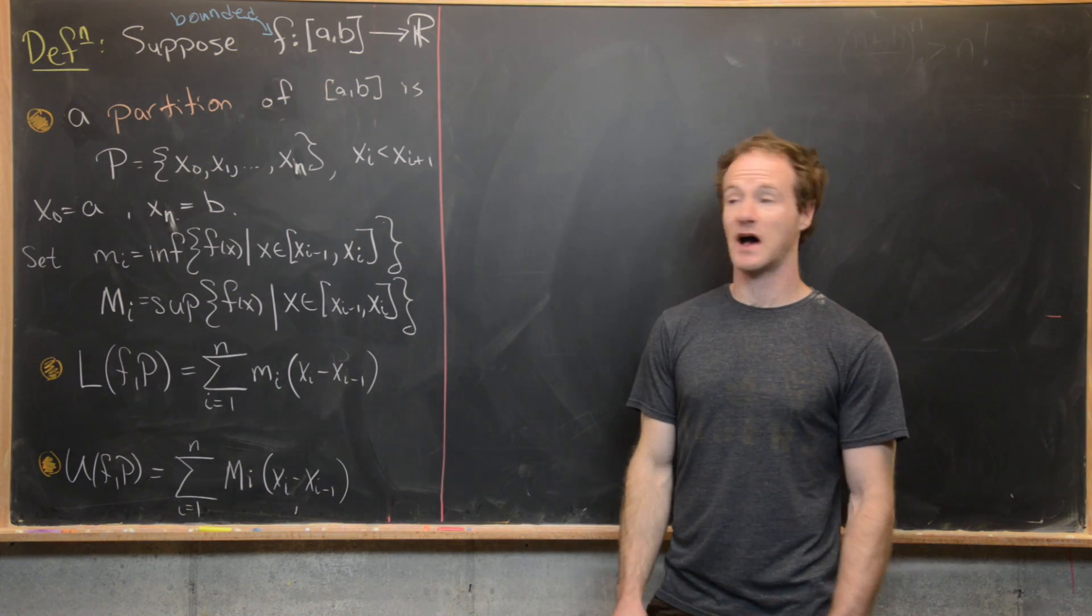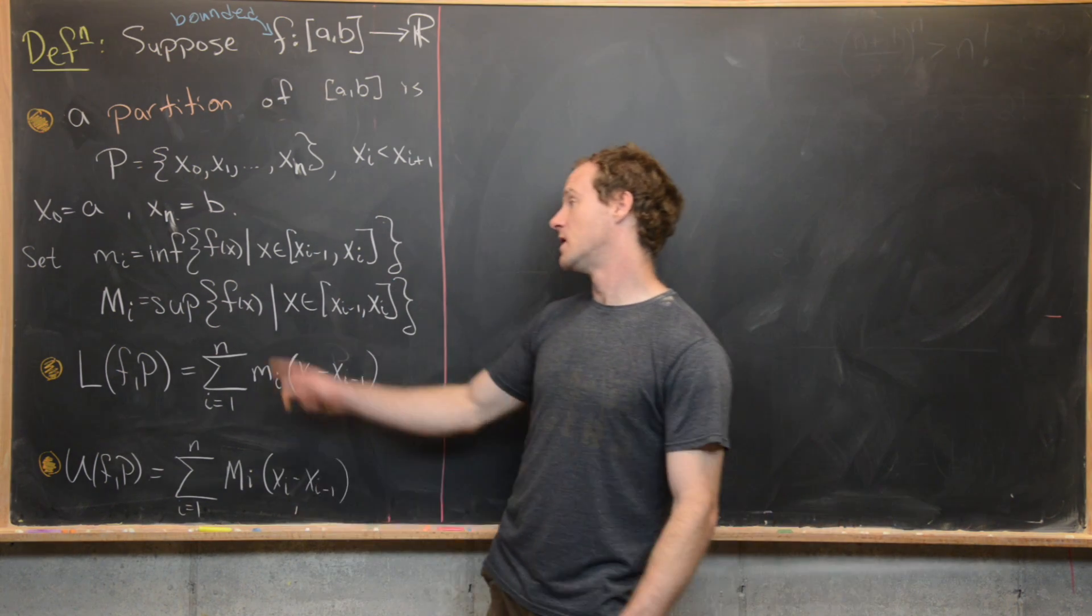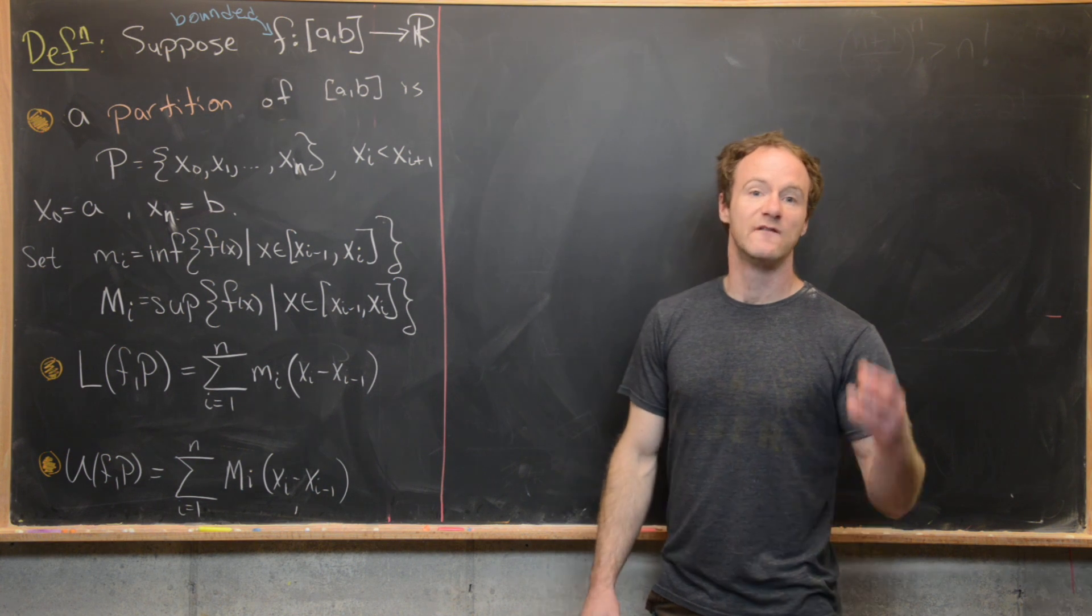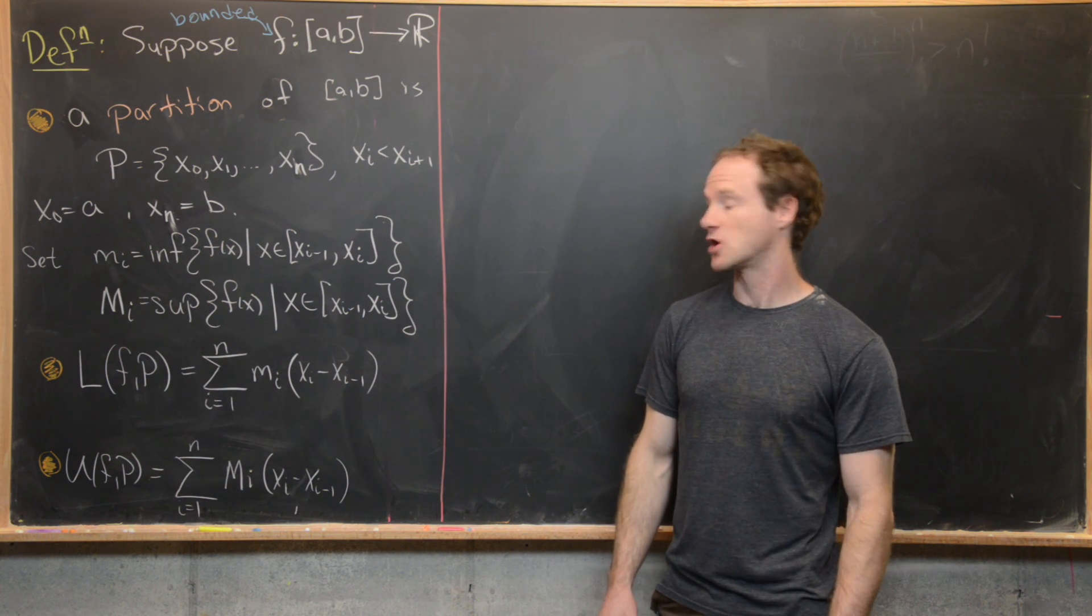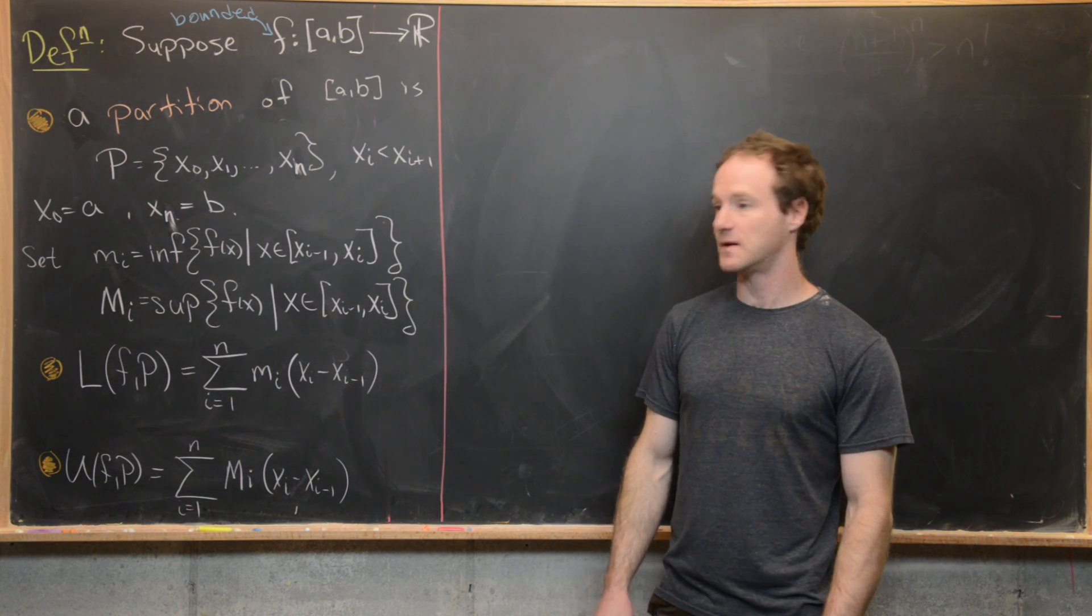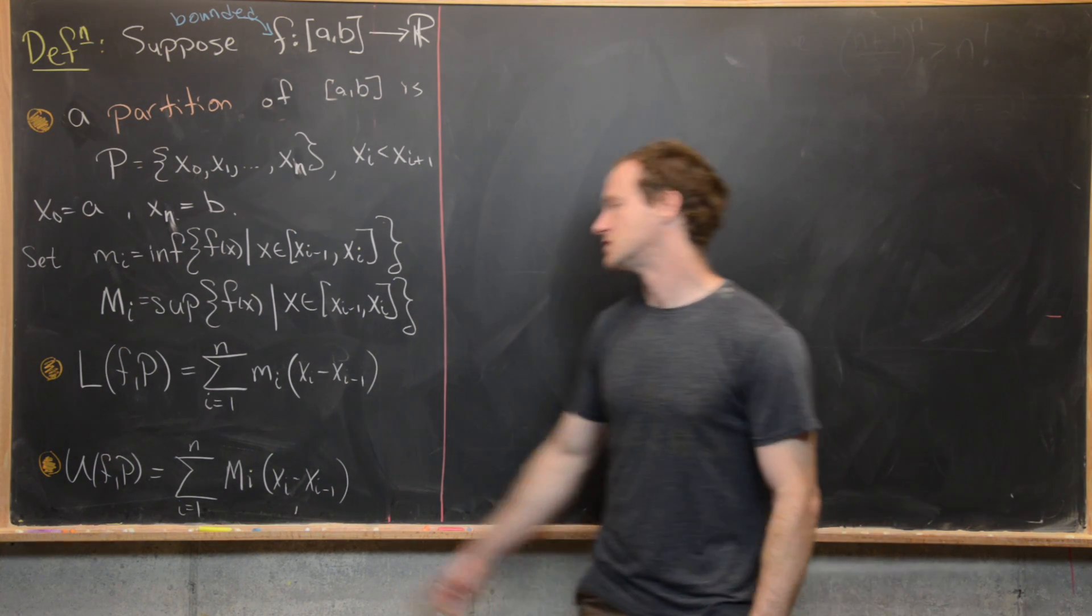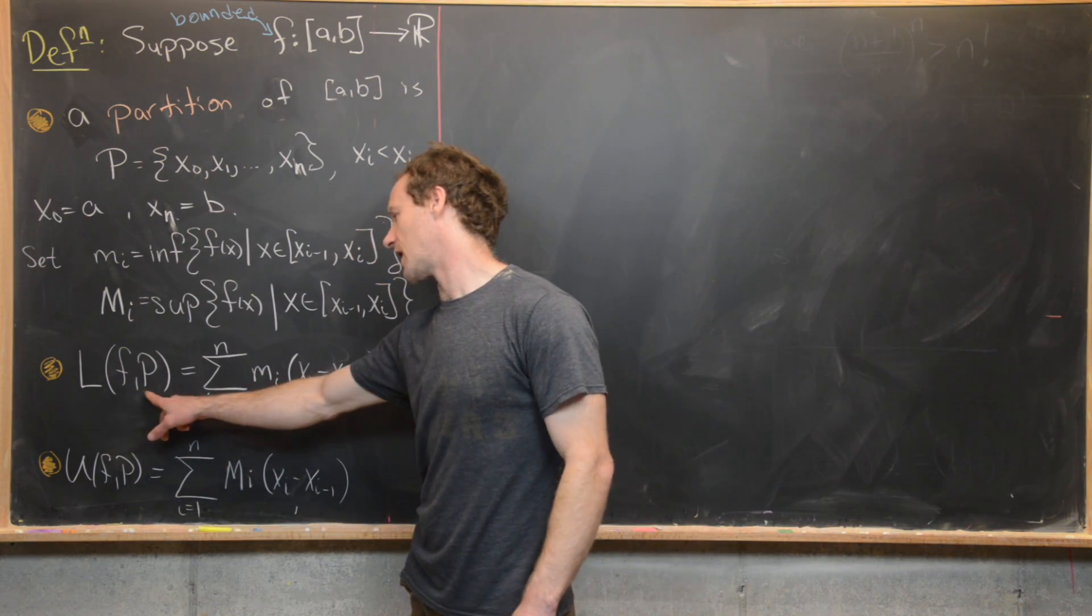And then capital M_i is the supremum of f as x goes on the same subinterval. Finally, we'll define these things called the lower and upper sums. And these depend on the function and the partition. So that's why I put this dependence here and here.